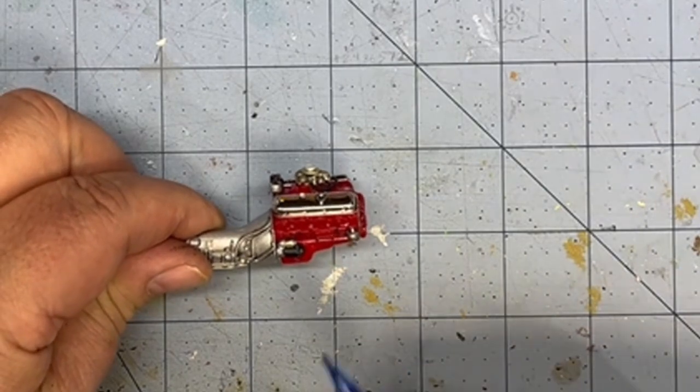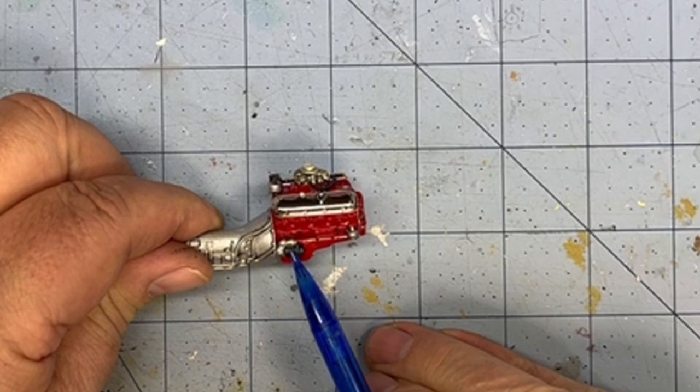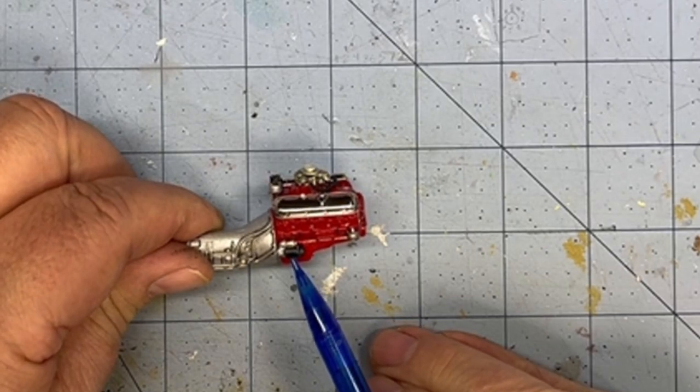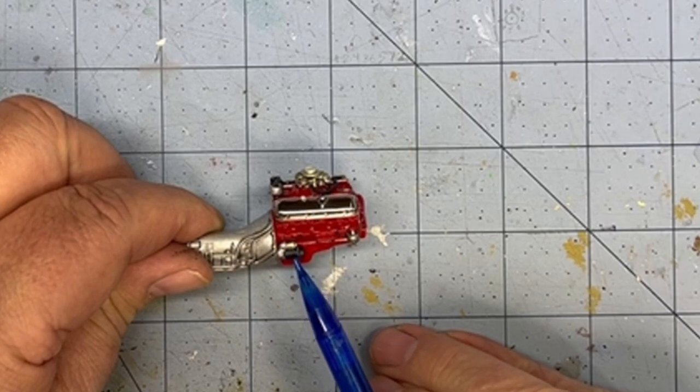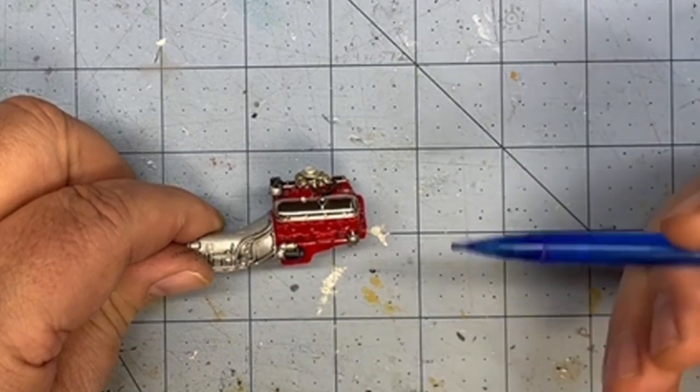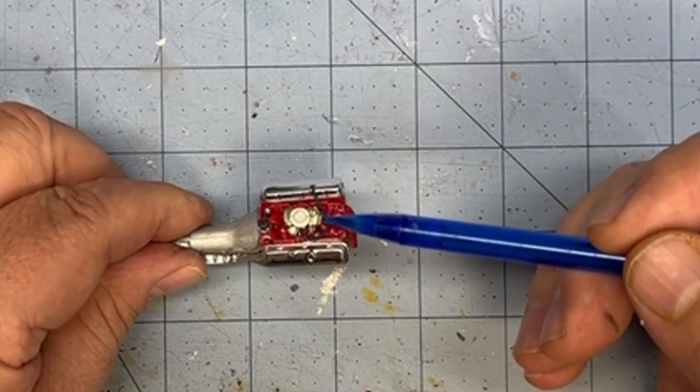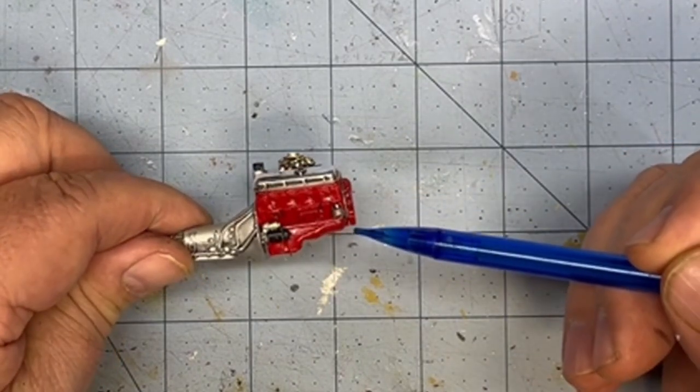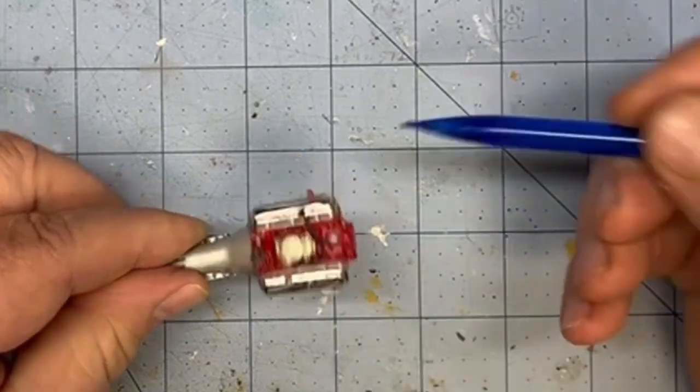My starter, I used flat aluminum on the front, mix of flat aluminum and gold leaf which is X-12 from Tamiya for the center of the, I guess that's the capacitor. I also did that on the carb and the bottom part of the fuel pump. And then this is just semi-gloss black.